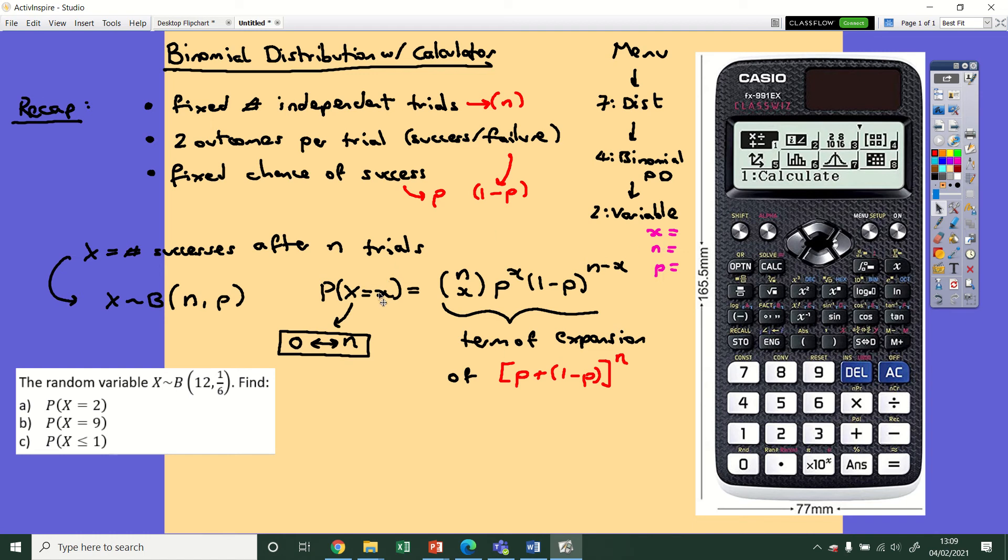So x obviously is the value that goes here, the number of successes that you want. n is the number of trials and p is the chance of a success. It will then calculate for you any probability using this formula here. So by way of example, you're going to want to write this one down maybe. The random variable X is binomial with 12 trials and a sixth chance of success. That sixth is very reminiscent of a dice roll, so rolling 12 dice and counting how many sixes you get, for example, would be a good reference point to think about that.